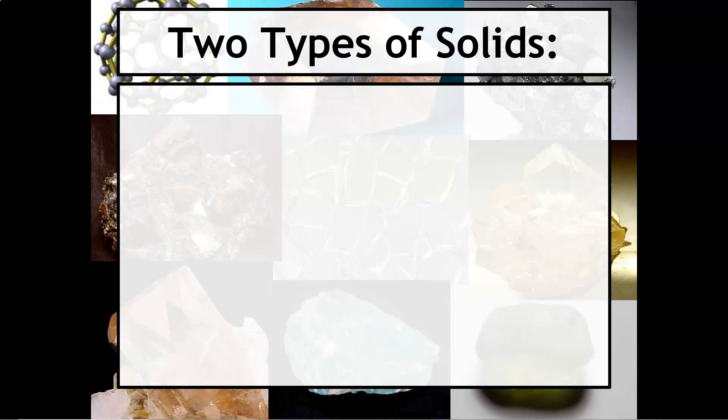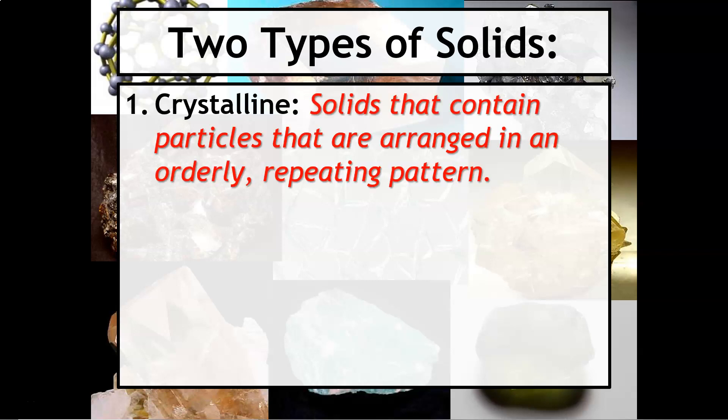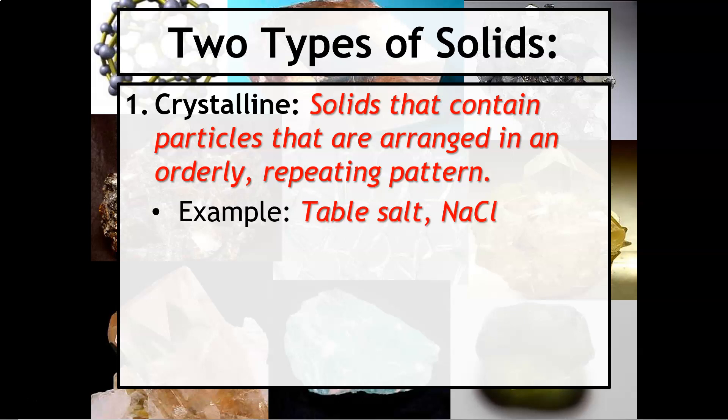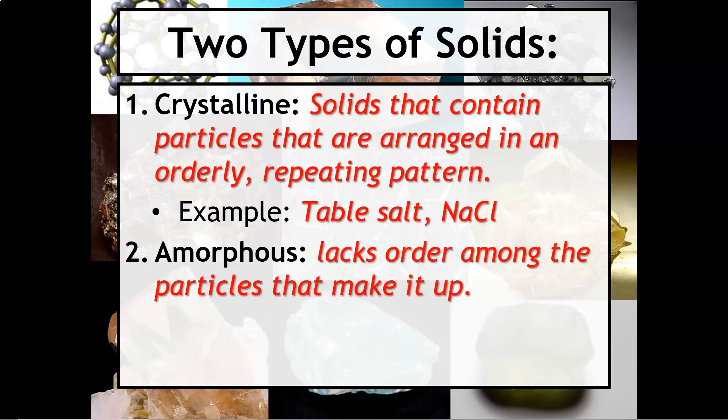There are two major types of solids. The first is a crystalline solid — these are solids that contain particles arranged in an orderly repeating pattern, for example sodium chloride or table salt. An amorphous solid is the second type; this is a solid that lacks order among the particles that make it up. An example of this would be glass or silicon dioxide.